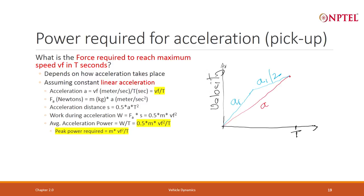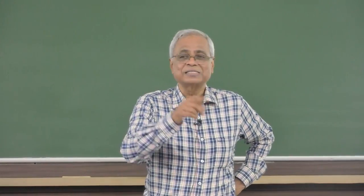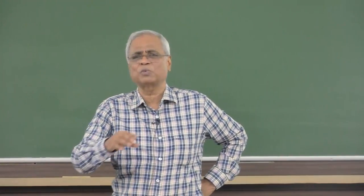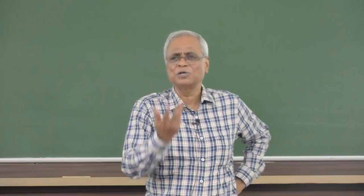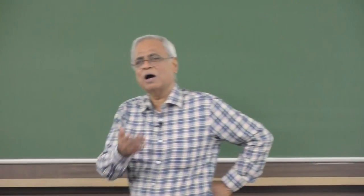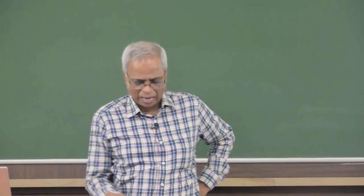What is the acceleration distance? When it goes t seconds, what is the distance it will travel? If you remember the formula: S equals ut plus half at squared. U was 0, the initial velocity was 0. So S equals half at squared.